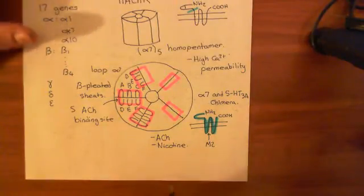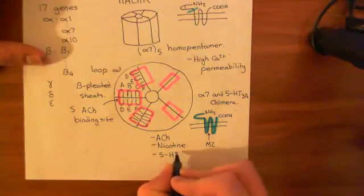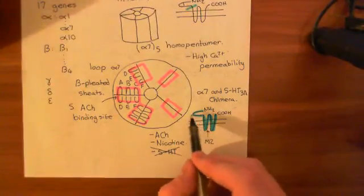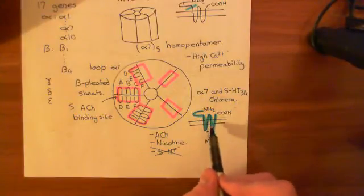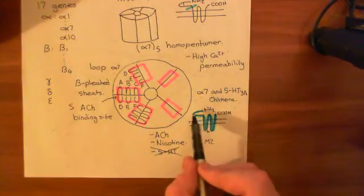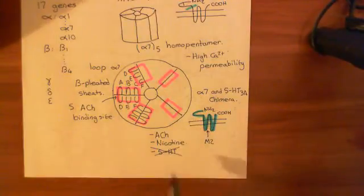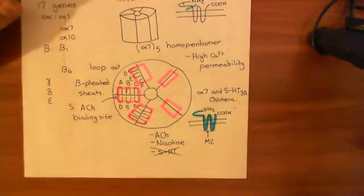It will not open in response to 5-HT anymore — it's not 5-HT selective anymore. That's because we've removed the ligand-binding domain for 5-HT that the 5-HT3A receptor had; we've only taken the bit that forms the pore. The bit that is now recognizing the ligand is recognizing acetylcholine and nicotine rather than 5-HT.